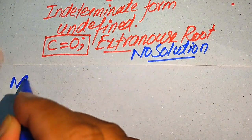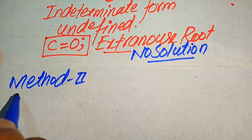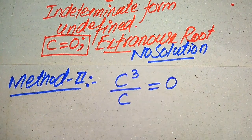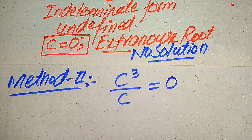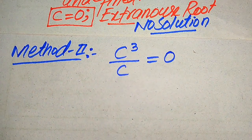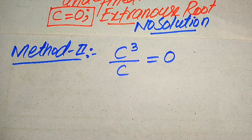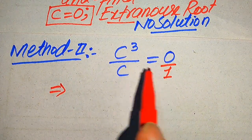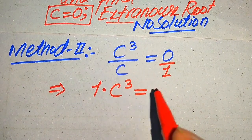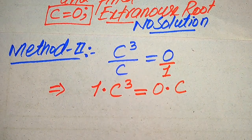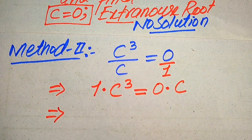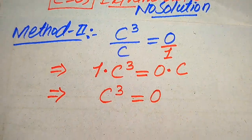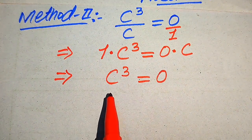Now we move to the second method. The given equation is c cubed divided by c equals 0. Here is a smart technique to find the value of c more quickly. The denominator on the right-hand side is 1, so we cross-multiply. Multiplying 1 by c cubed gives c cubed, and multiplying c by 0 gives 0. So we have c cubed equals 0.